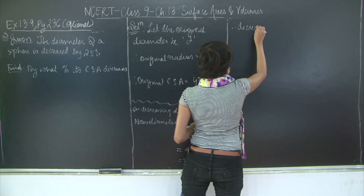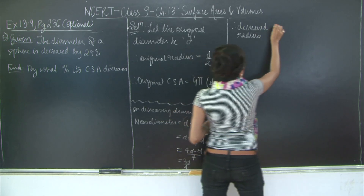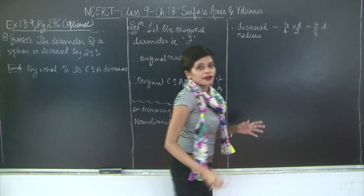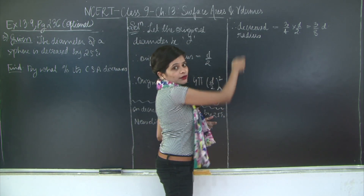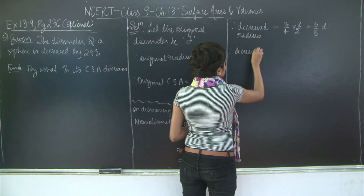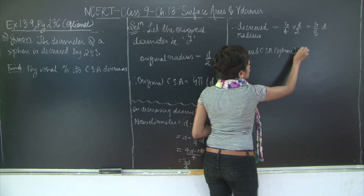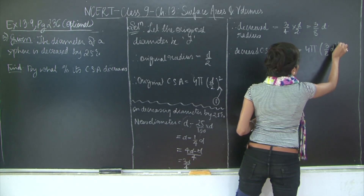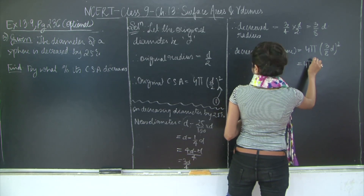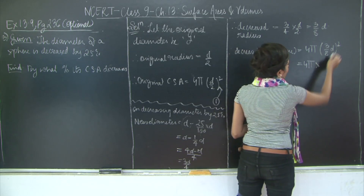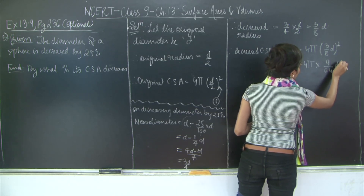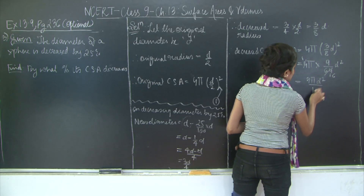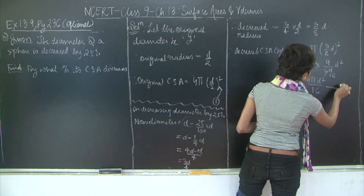Therefore the decreased radius is 3d/8. Now we find the decreased curved surface area of the sphere, which equals 4πr², where r is 3d/8. So this is 4π(3d/8)². Since 3² is 9 and 8² is 64, this gives 4π × 9d²/64, which simplifies to 9πd²/16. This is the decreased curved surface area. Let's mark this as equation 2.